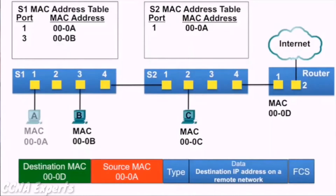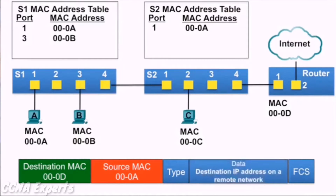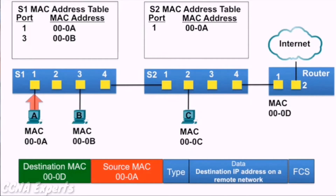In this video, PCA is going to send a packet to the internet because the destination IP address is on another network. The source MAC address is that of PCA, and the destination MAC address is that of the router at 000D. The Ethernet frame is sent to switch S1.